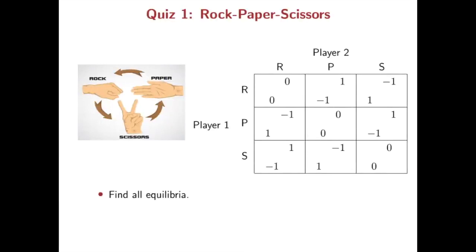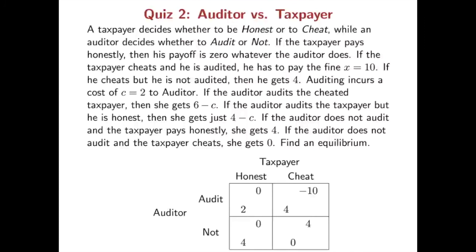Here is a quick quiz: please find all equilibria in this Rock-Paper-Scissors game, and post your answer to our Microsoft Teams channel. There is also another quiz — a game between an auditor and a taxpayer. The auditor can audit or not, and the taxpayer can report honestly or cheat. Given this payoff, please find the equilibrium in this game.